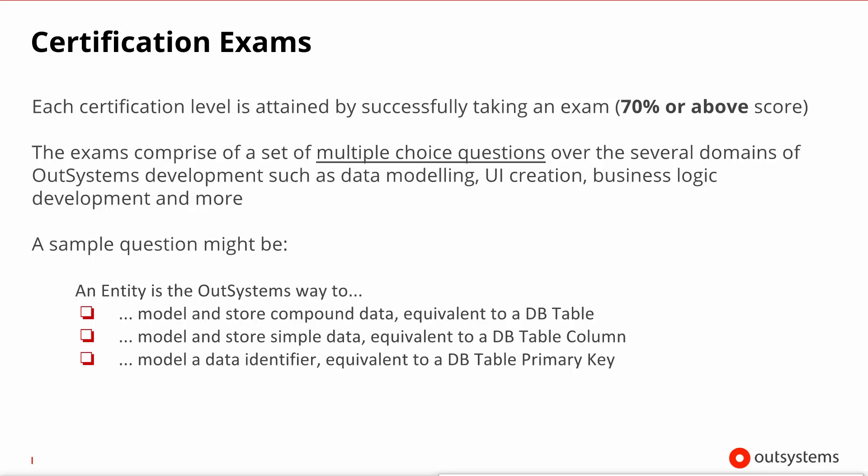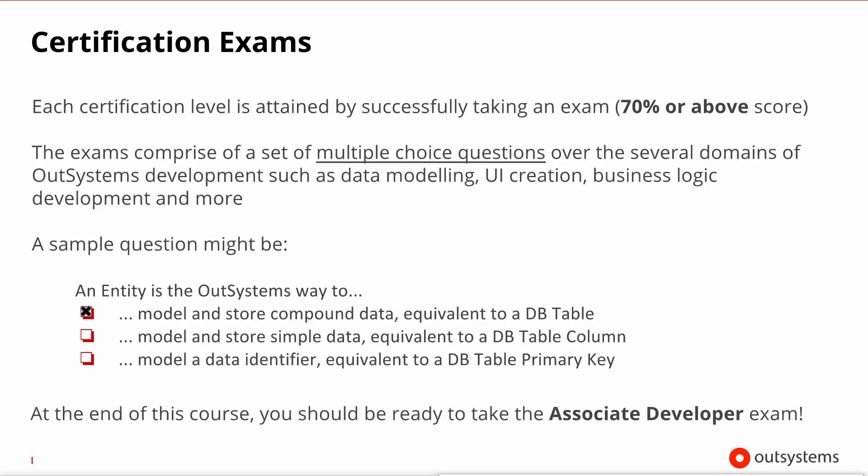For your reference, a sample of what you might find in the Associate Developer Certification Exam: 'An entity is the OutSystems way to — model and store compound data equivalent to a database table, model and store simple data equivalent to a database column, or model a data identifier equivalent to a database table primary key.' The answer is: model and store compound data equivalent to a database table. We expect that upon completing the current course, you will be ready to successfully take the Associate Developer Exam.